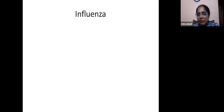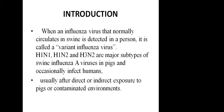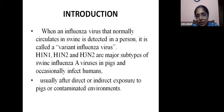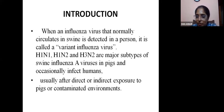Next is influenza. When an influenza virus that normally circulates in swine is detected in a person, it is called a variant influenza virus. The major subtypes of swine influenza virus are H1N1, H1N2, and H3N2. In pigs, they occasionally infect humans, usually after direct or indirect exposure to pigs or contaminated environments.